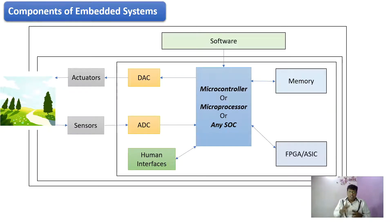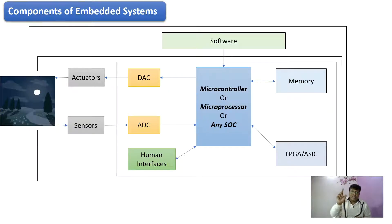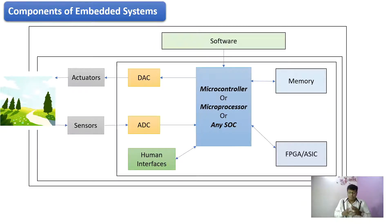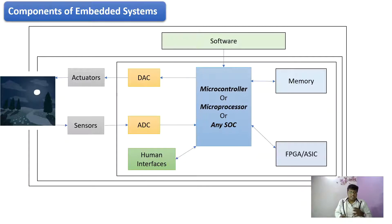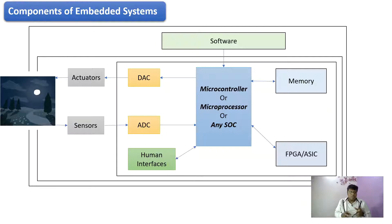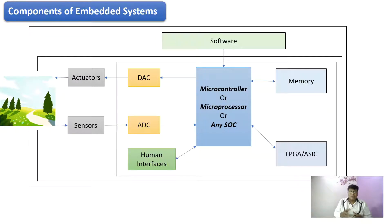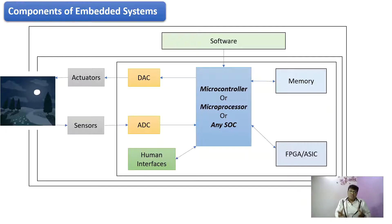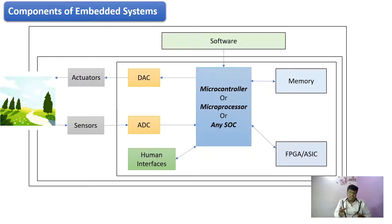From the ADC, we do some processing based on the algorithm designed by the software, and the software instructs the hardware to perform specific operations. Once the processing is done, we deliver the outputs via DAC, converting the digital signal back to analog and providing it to an actuator. Actuators are movable physical parts — an example is a motor. These run based on sensor inputs, enabling interaction with the external environment.